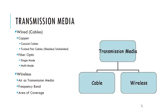The transmission media used by a computer network can be wired media — cables — or wireless media using air as the transmission medium. The wired cables can be made of copper or fiber optic. Copper cables can either be coaxial cables or twisted pair cables.